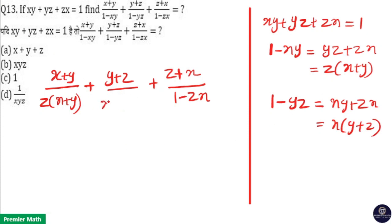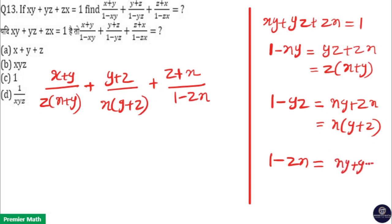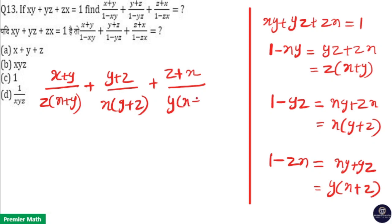Same way, 1 - zx from the first equation is xy + yz. Now y is common, so y(x + z) = 1 - zx. Put that value in the denominator, giving (z + x) / [y(x + z)].